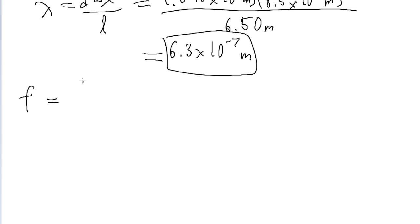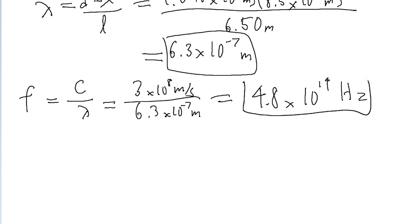Because a common formula for the frequency of light is equal to the speed of light divided by its wavelength. So we just take the speed of light, 3 times 10 to the power of 8 meters per second, and divide it by the wavelength we just found, 6.3 times 10 to the power of negative 7 meters. Put that into a calculator and we find a frequency of about 4.8 times 10 to the power of 14 hertz, and that is the answer to this problem.